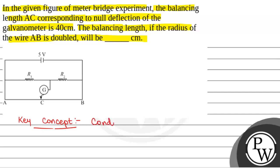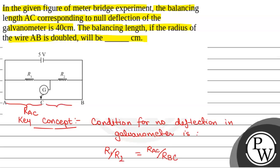in galvanometer. The condition for no deflection in galvanometer is R1 by R2 is equal to RAC by RBC, where RAC is the resistance of bridge wire of length AC and RBC is the resistance of bridge wire of length BC.